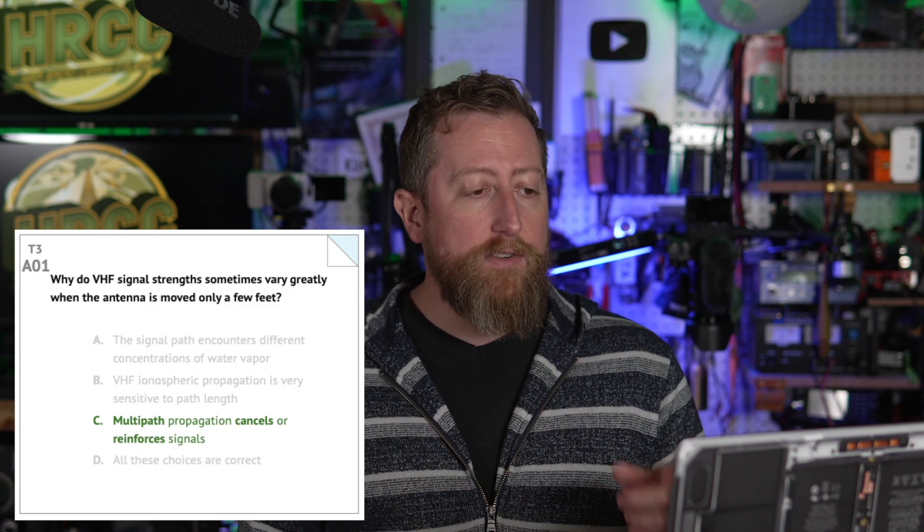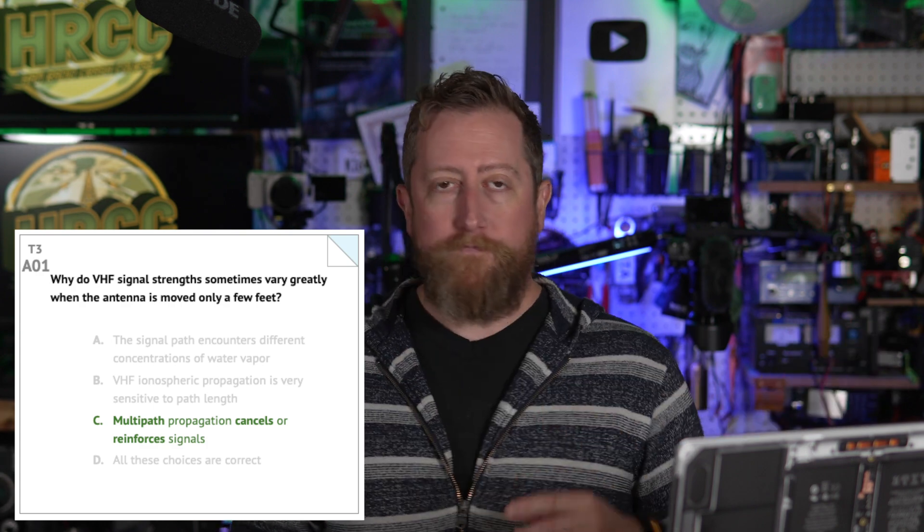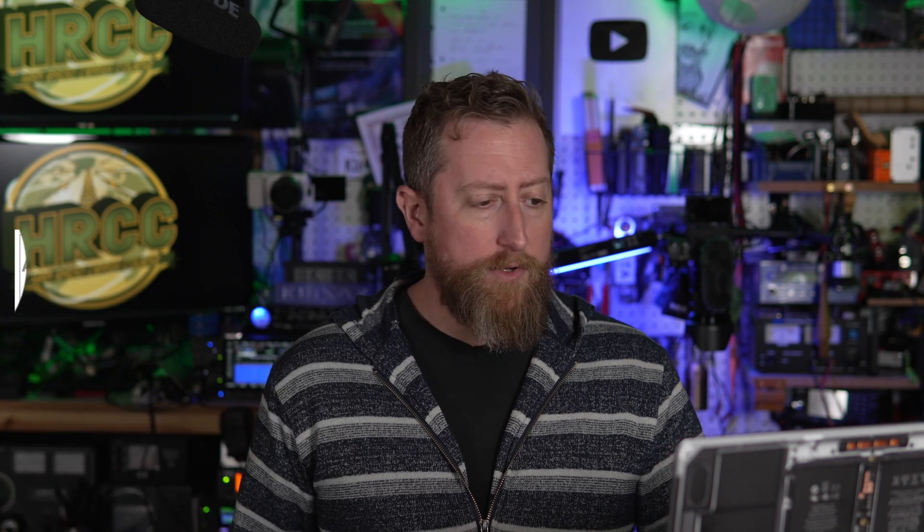Why do VHF — very high frequency — signal strengths sometimes vary greatly when the antenna is moved only a few feet? The answer is C: multi-path propagation cancels or reinforces your signal. So if you're having trouble hitting a repeater or talking to a friend on simplex, try moving around a little bit. Stepping a couple feet in one direction can make your signal stronger or less powerful, so keep that in mind if you can't establish a repeater connection when you normally have no issue.